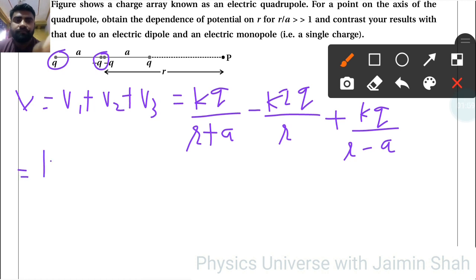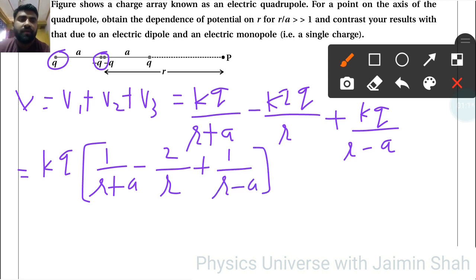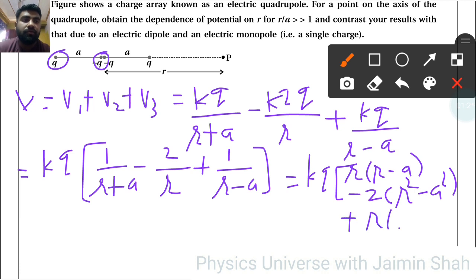Common terms KQ bracket: 1 upon R plus A minus 2 upon R plus 1 upon R minus A. So this is equal to KQ, now here R into R minus A, second term is minus 2 into R square minus A square, and third term is plus R into R plus A upon here R square minus A square into R.